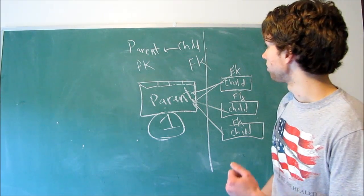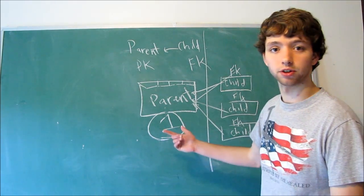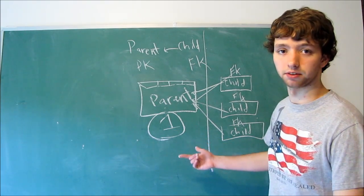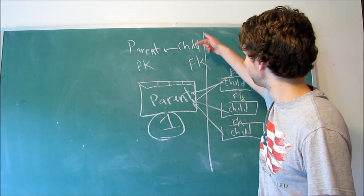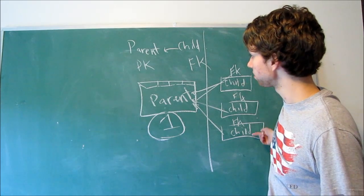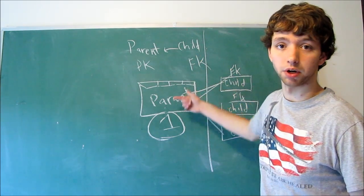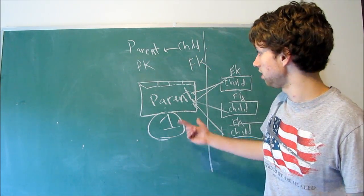Hopefully, that's kind of making sense. Just keep in mind, parent-child relationships. I'm not trying to repeat myself, but I'm trying to repeat myself so you get this drill in your brain. Foreign key goes on the child. Primary key goes on the parent. And soon, we'll be talking more in-depth about keys.